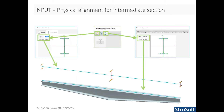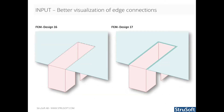Now you have the option to set the physical and analytical eccentricity separately for intermediate sections. In the new version, edge connections are displayed with customizable strips. The width of the edge connection can be modified in the display settings for shells.